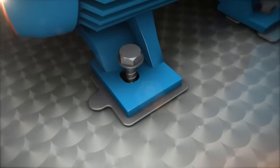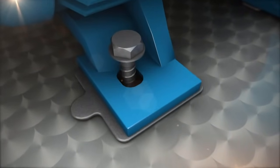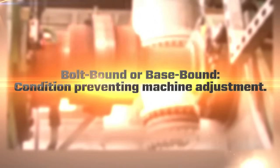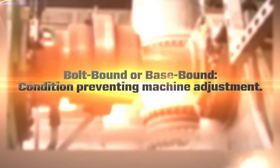A common problem we encounter when doing shaft alignment is to become bolt bound or base bound. This is defined as a condition that prevents a machine adjustment from being accomplished because of insufficient clearance.